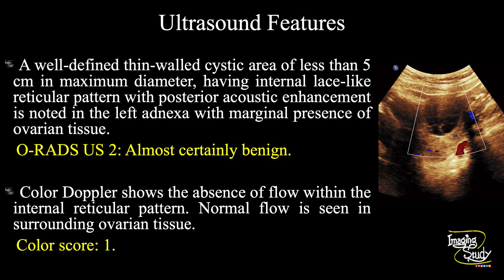In summary, a well-defined thin-walled cystic area of less than 5 cm in maximum diameter, having an internal lace-like reticular pattern with posterior acoustic enhancement, is noted in the left adnexal region with marginal presence of ovarian tissue. Color Doppler shows absence of flow within the internal reticular pattern, and adjacent surrounding normal ovarian blood flow is seen. So the lesion is an ovarian hemorrhagic cyst.